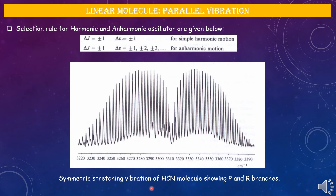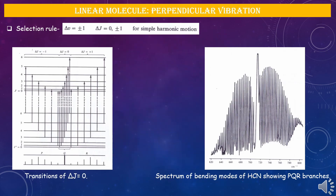During perpendicular vibration, the selection rule is Δv = ±1 and ΔJ = 0, ±1 for simple harmonic motion. Thus vibration can occur without a simultaneous rotational transition, and we observe P, Q, R structure in the spectra of HCN. The presence of a Q branch indicates perpendicular vibration. We should note that polyatomic molecules with zero dipole moment do not give rotational spectra but can show IR spectra, from which the moment of inertia can be determined.